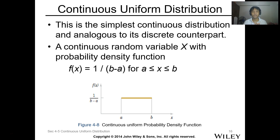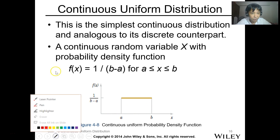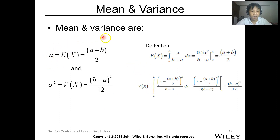Let's proceed with the continuous uniform distribution. This is the simplest continuous distribution, analogous to its discrete counterpart. A continuous random variable x with probability density function f(x) = 1 over (b − a) is represented as a flat line from a to b — it's simply the area under the curve.